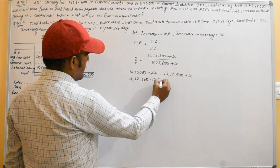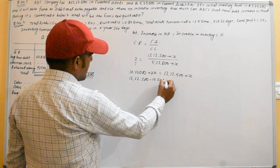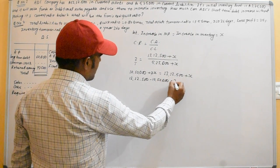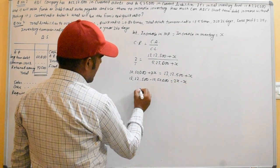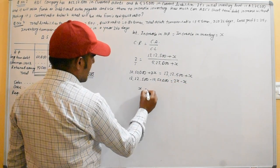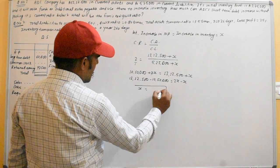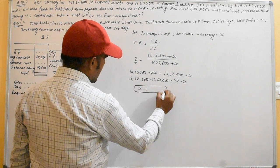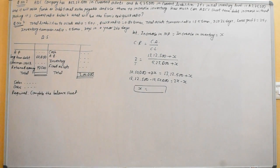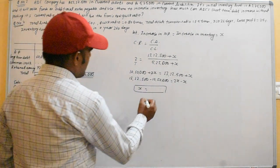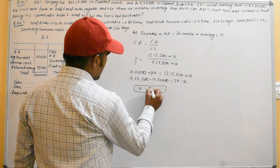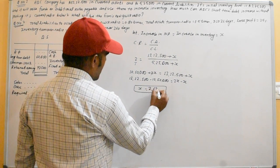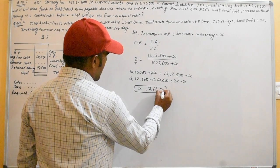Setting up the equation: 2 times (5,25,000 plus x) equals 13,12,500 plus x. Solving: 10,50,000 plus 2x equals 13,12,500 plus x, so x equals 2,62,500. The maximum increase in short-term debt is 2,62,500.